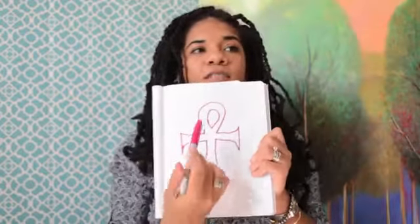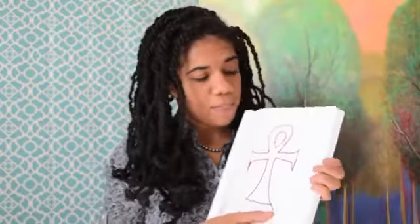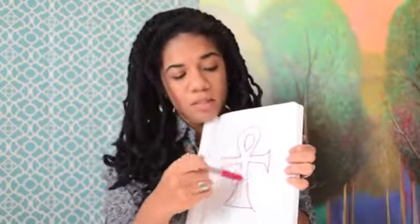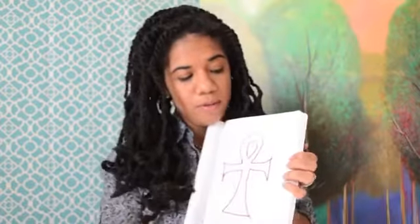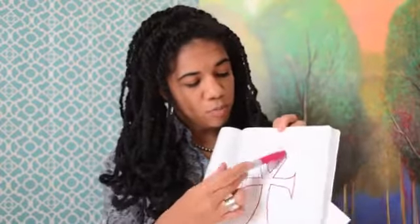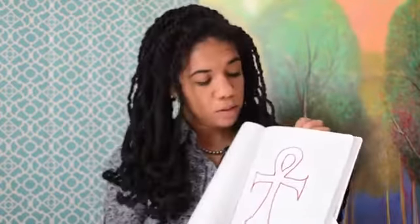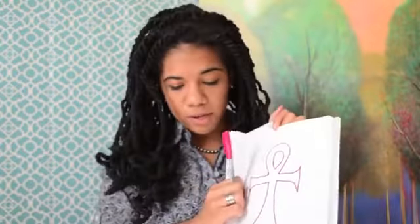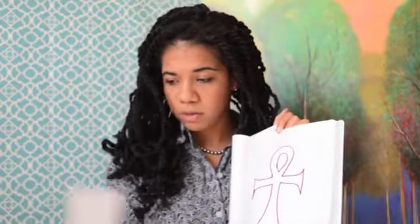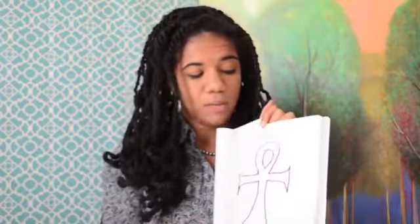I wanted to cover this because I've learned so many different things about the Ankh. It has this loop at the top which some say represents the womb, women, things like that. I've also heard some people say it's an African cross, and I've heard some say it's an African version of the cross in Christianity since Christ died on the cross.